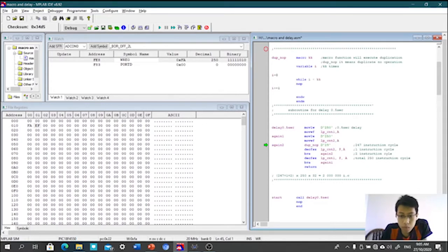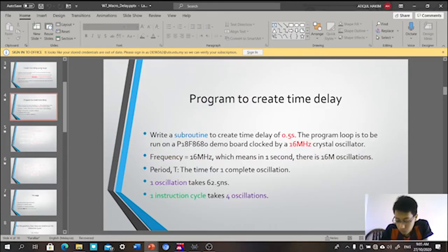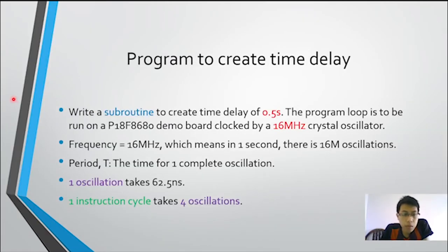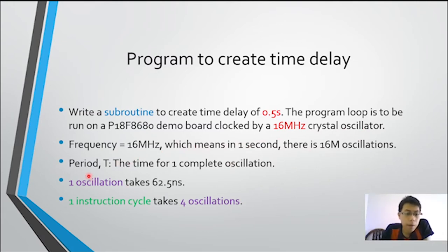Macam mana saya tahu saya kena loop sebanyak dua juta? Contohnya dalam question tadi: 'How to create a delay of 0.5 second with a crystal of 16 MHz.' So maknanya saya kena create time delay 0.5 second dengan sebanyak 16 MHz crystal oscillator. Performasi dia bagi 16 MHz, which mean in one second there are 16 mega oscillations.